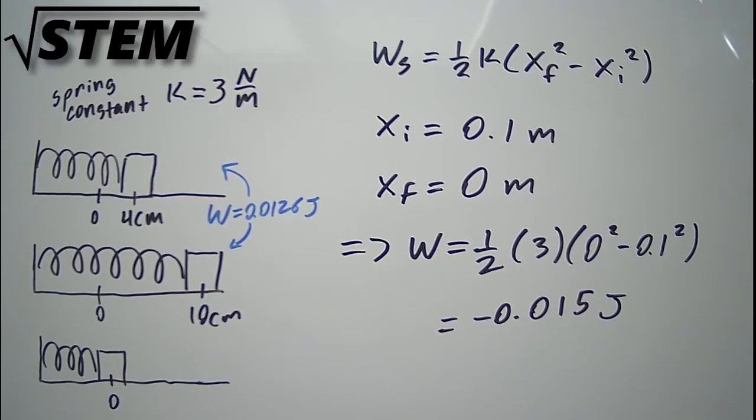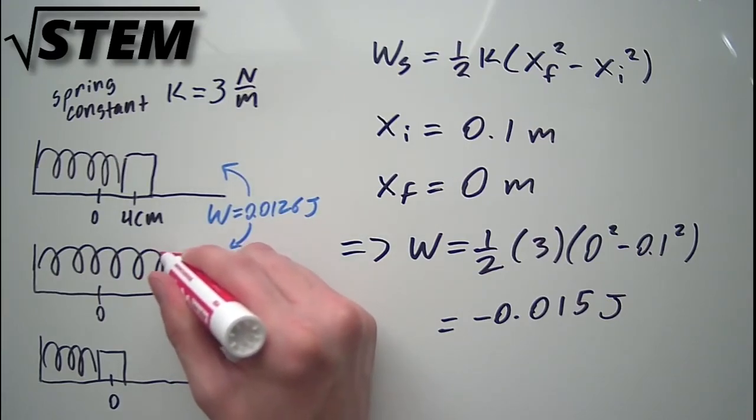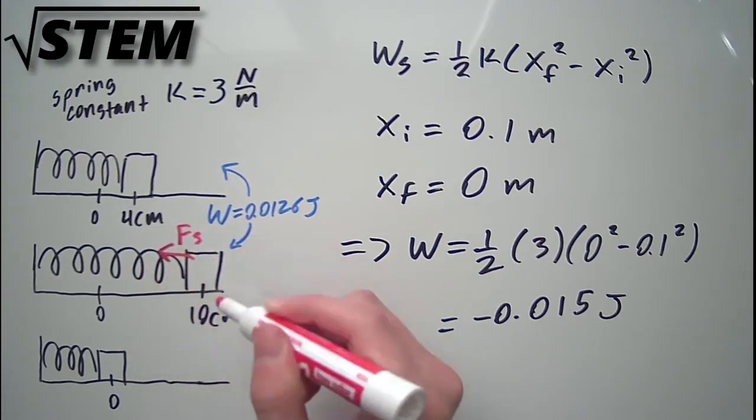This is negative because while the block is on the positive side of the equilibrium, the force that the spring puts on the block pulls it back in the negative direction.